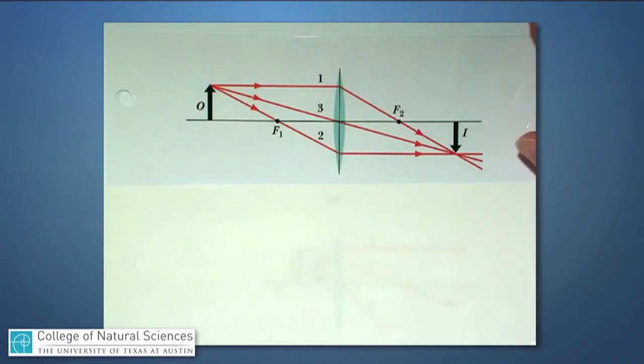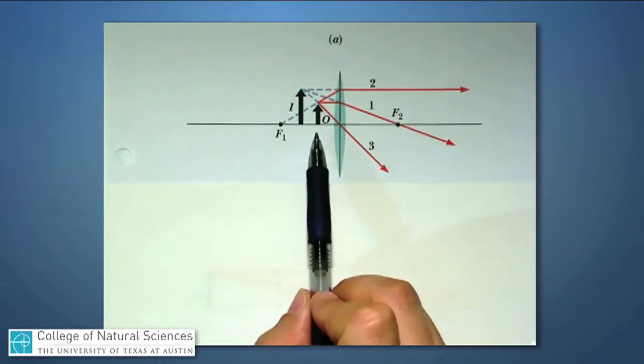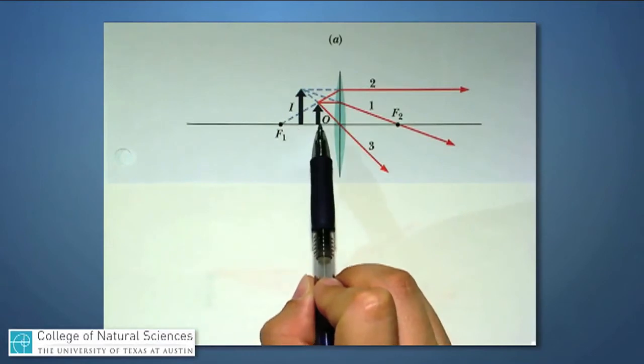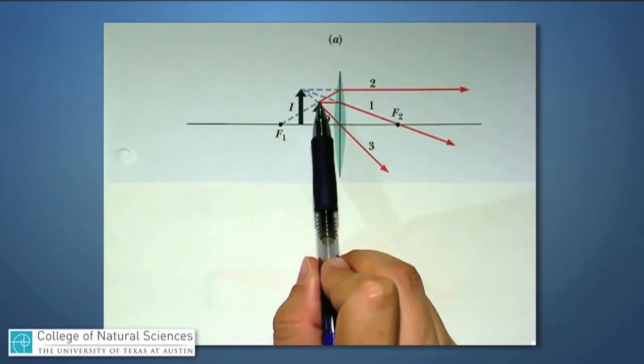The second example I'd like to do is one in which the object is placed in front of a convex lens again, but it's placed very close to the convex lens itself. So let's imagine that it's inside. If this is the focal length, we place the object right there. And then we'll draw the same three rays, one that comes into the lens parallel.